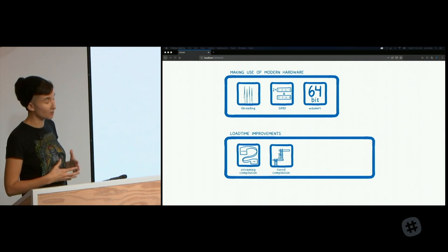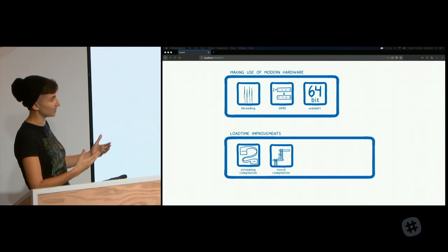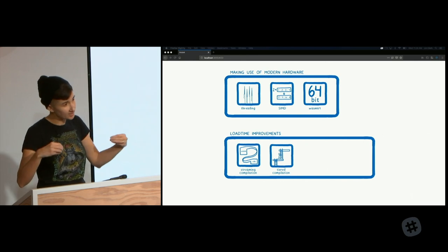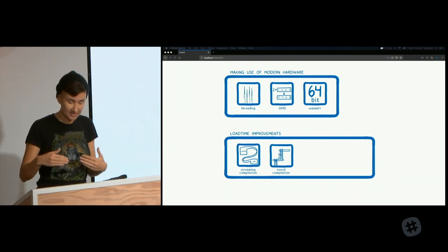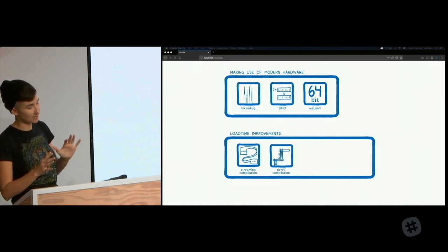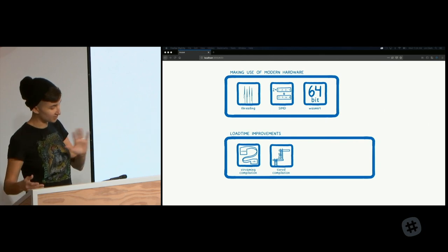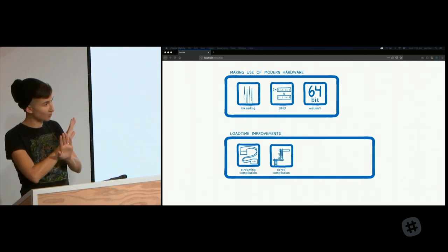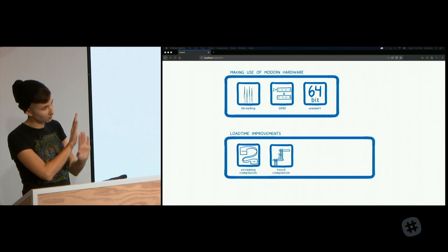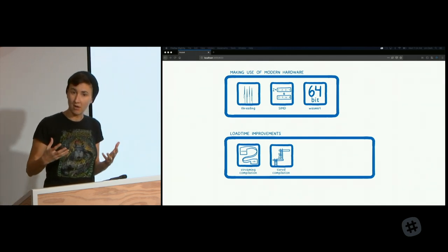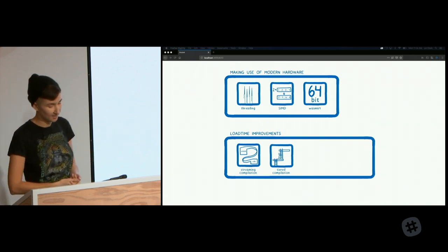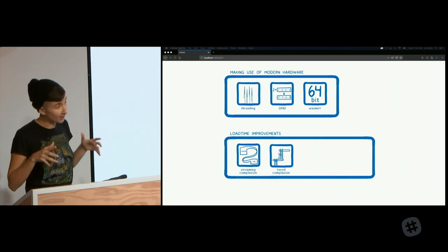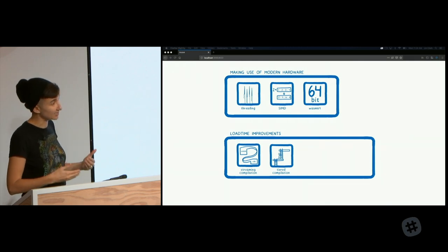Tiering your compiler also helps. In Firefox, we have two compilers: the baseline compiler kicks in immediately, streaming and getting your file compiled quickly for fast load times. Then the optimizing compiler runs in the background on several threads while your code is already starting to execute — it takes longer but generates extremely fast code, and when done, the baseline version is swapped out. We're also working on a new optimizing compiler called CraneLift at Mozilla, designed to compile code quickly in parallel at the function-by-function level.